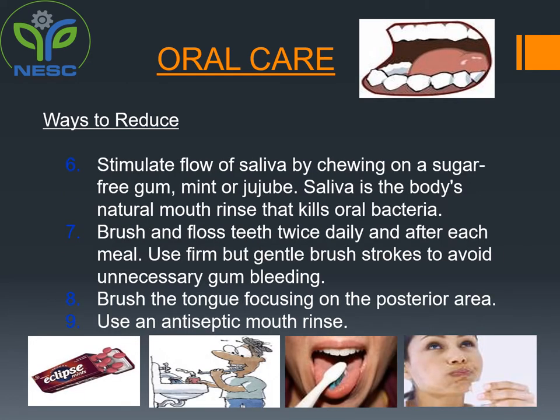Number six, stimulate flow of saliva by chewing on a sugar-free gum, mint, or lozenge. Saliva is the body's natural mouth rinse that kills oral bacteria. Number seven, brush and floss teeth twice daily and after each meal — use firm but gentle brush strokes to avoid unnecessary gum bleeding. Number eight, brush the tongue focusing on the posterior area. Number nine, use an antiseptic mouth rinse.